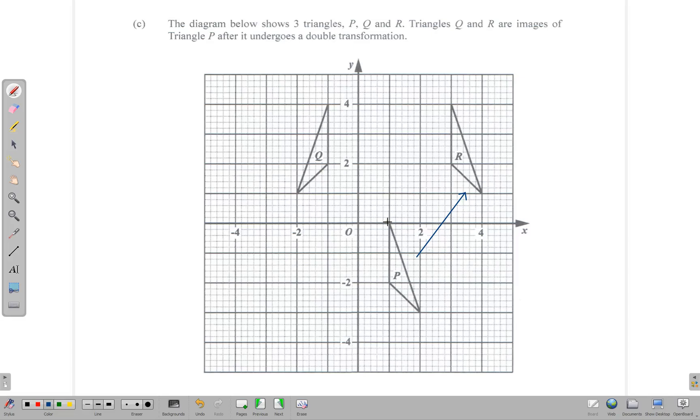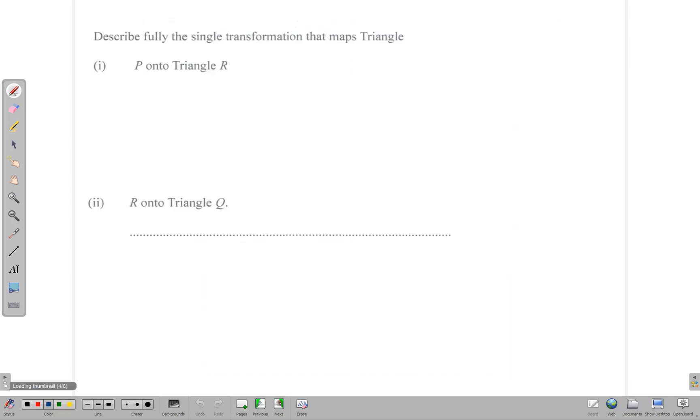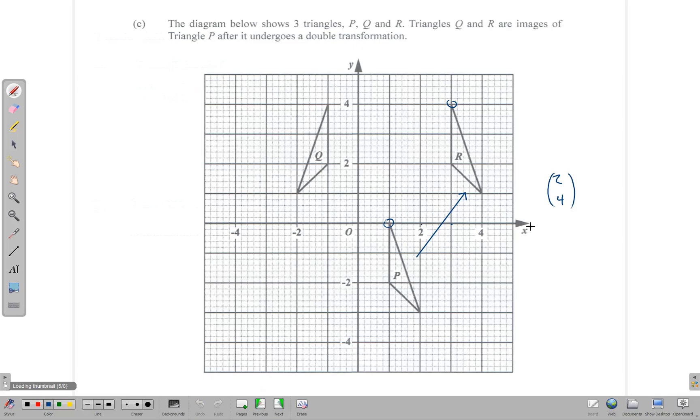To find what the vector is, because the translation needs a vector, we can simply count from one point on our object to the similar point on our image. Counting from here to here, we realize that we go across one, two, and go up one, two, three, four. So our transformation that maps P onto R is a translation T with vector (2, 4).